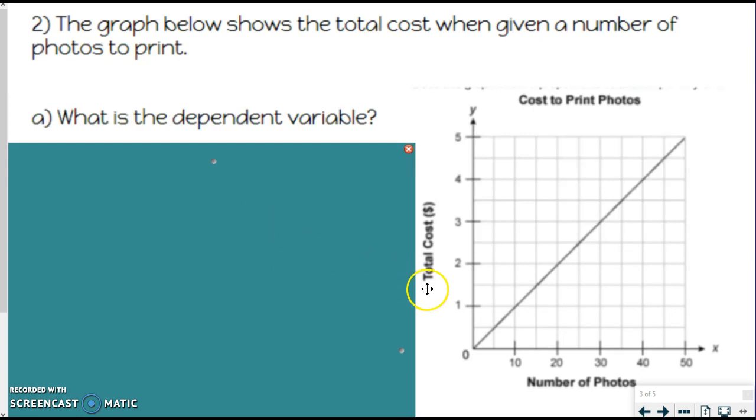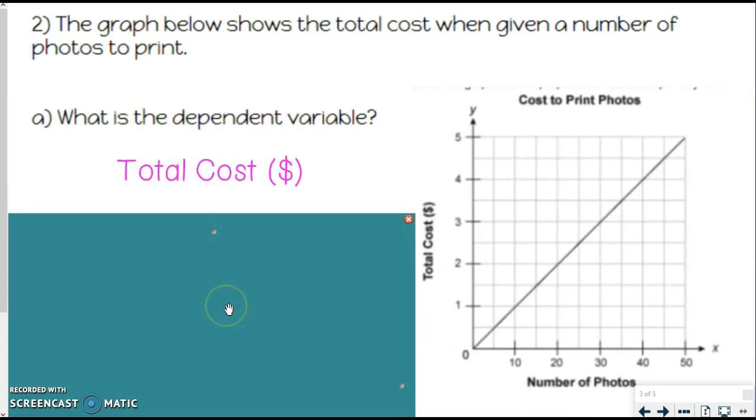So total cost is dependent on however many photos are being printed. So total cost is the dependent variable. Depends on the number of photos. Now, again, you can put the dollar sign if you want. I just wanted you to see the label with it, because that's how it is on the graph.